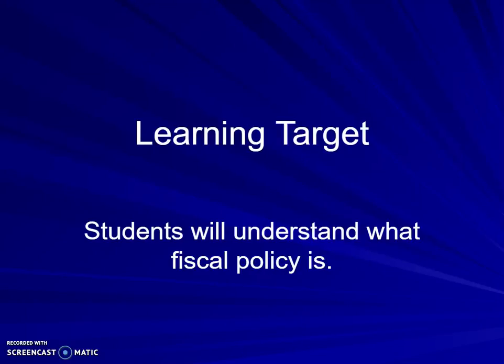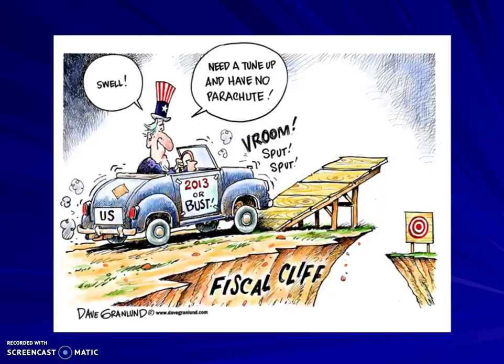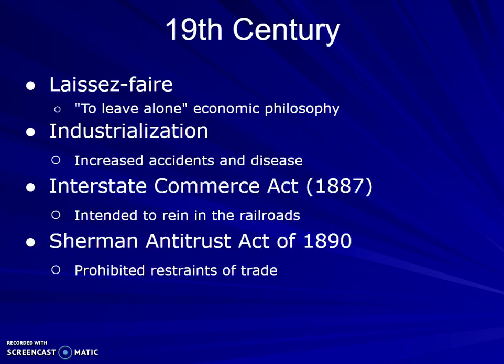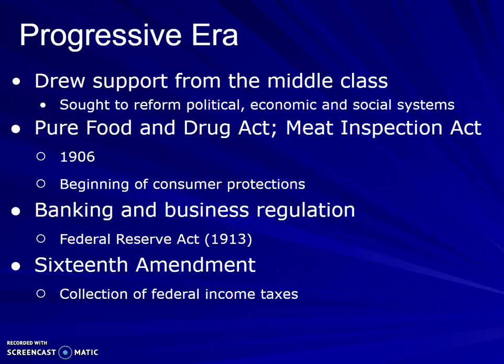We are looking at learning targets of understanding fiscal and monetary policy. When we look at the roots of economic policy, we're looking at the 19th century laissez-faire industrialization with increasing accidents and disease. We start with the Interstate Commerce Act of 1887, which was intended to reign in the railroads, and the Sherman Antitrust Act of 1890, which was to prohibit the restraints of trade.